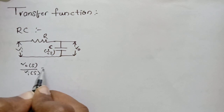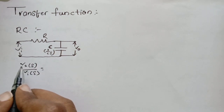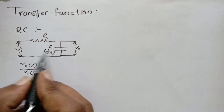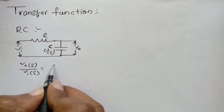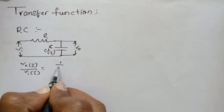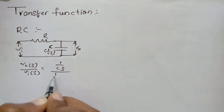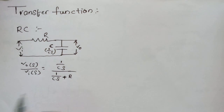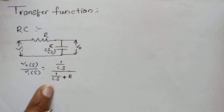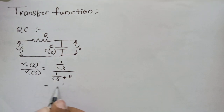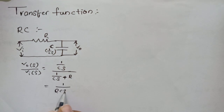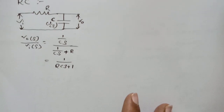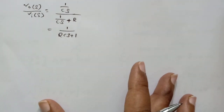Using the voltage division rule, we can find the voltage across the capacitor. Va times 1/Cs divided by total impedance. This is the transfer function for the RC network: 1/(RCs + 1). This is how we write the transfer function for an RC network.